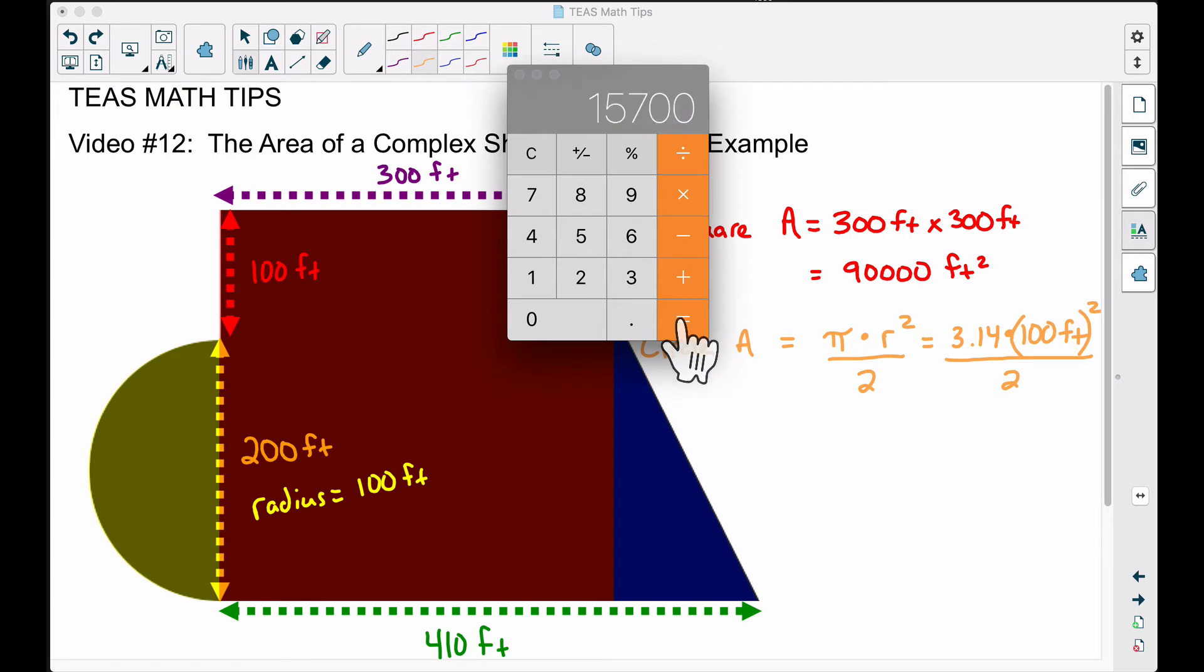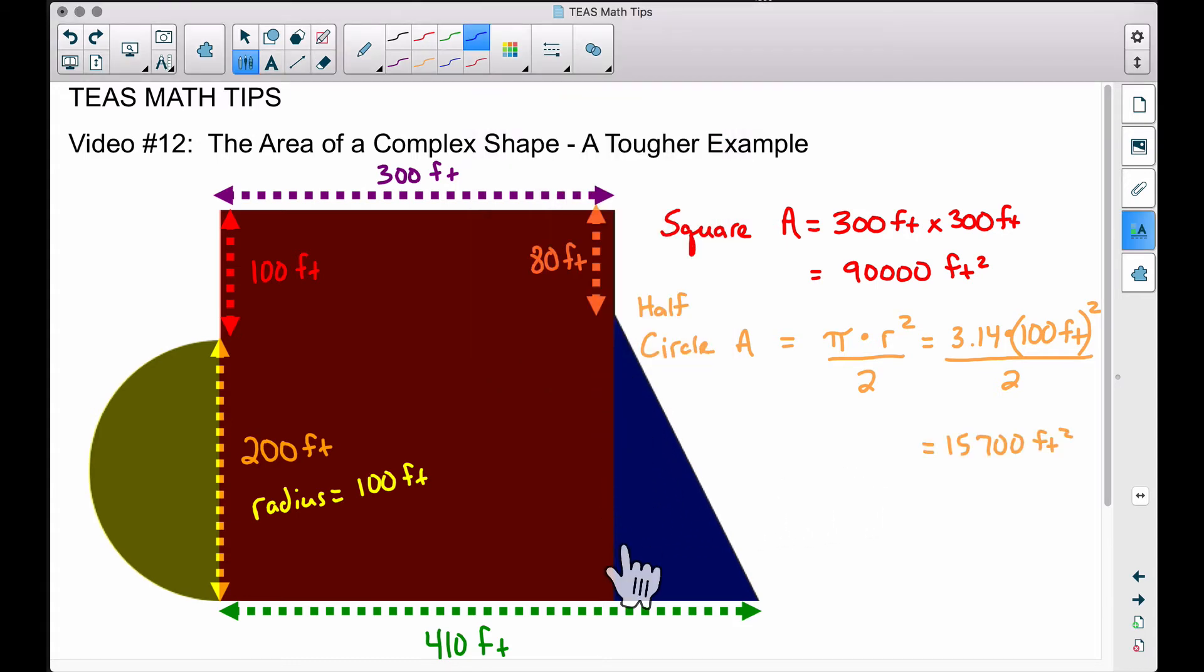Now let's divide that by two since we want the area of the half circle, and the area of that half circle will be 15,700 square feet. Last but not least, we have this triangle here, and we have to be careful with this triangle because we're missing this measurement here and this measurement going across here.